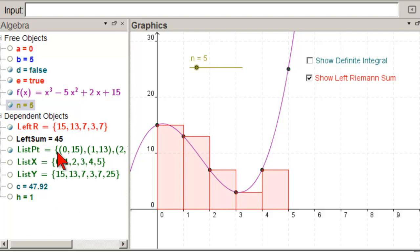We can see that the left Riemann sum is 45, and we can see that the exact integral is 47.92, and we can see what we're getting and losing. That's what we're going to do.